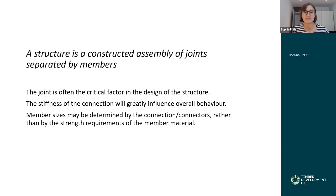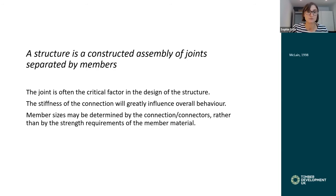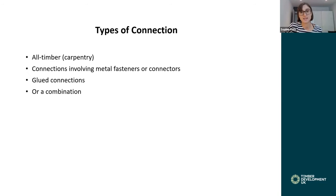This is not only true for timber design. In concrete, geometrical constraints influence member sizes due to bending radii, spacing requirements, or lap lengths in reinforcement. With steel, designers must think about bolt spacing and arrangement — you may need to increase beam sizes to accommodate the number of bolts required. The same applies to timber, but even more so because the required spacing and edge distances for fasteners in timber are much larger than for steel. So, what are the options for connecting timber? They can be grouped into: all-timber or carpentry joints, connections involving metal fasteners and connectors, and glued connections.